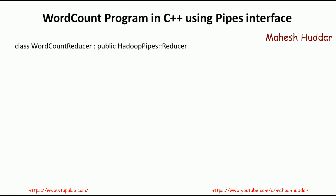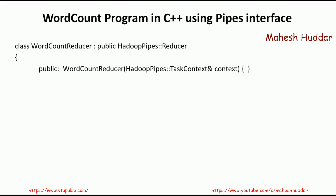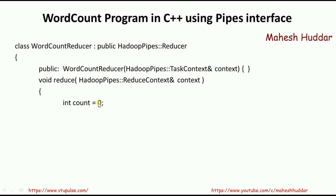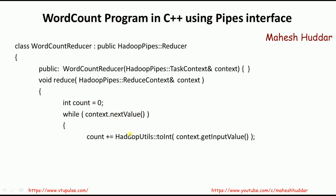These outputs are given as input to the reducer function. The reducer class name is WordCountReducer, which extends the reducer class, and has a constructor that does not do anything right now. The input to the reducer is the context — the output emitted by the mapper. For each key, count is initialized to 0 and then the values from the context are retrieved. Each value was added as a string in the mapper, so it is converted to int and added to count.